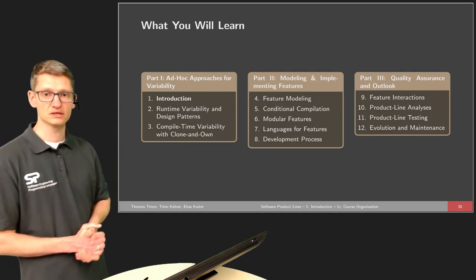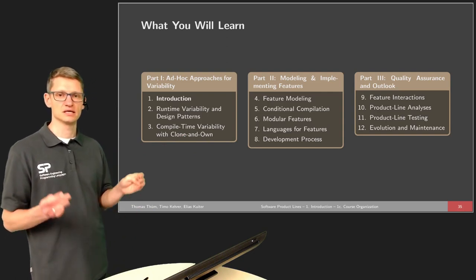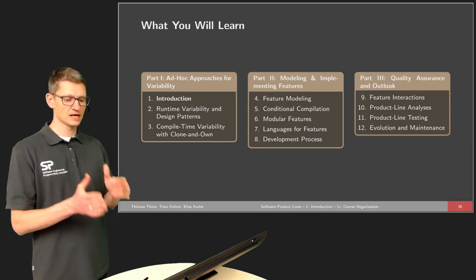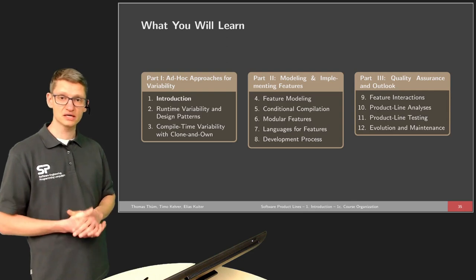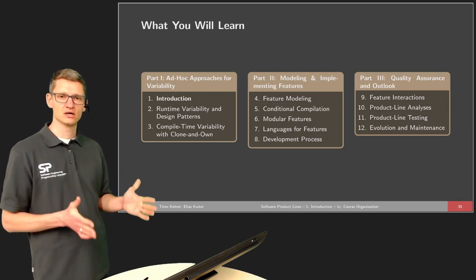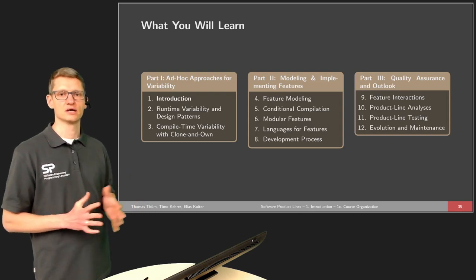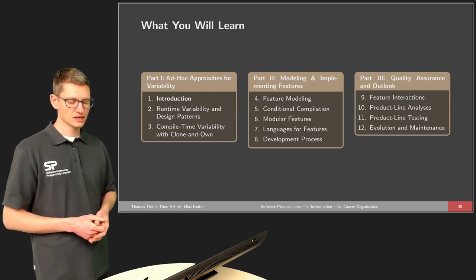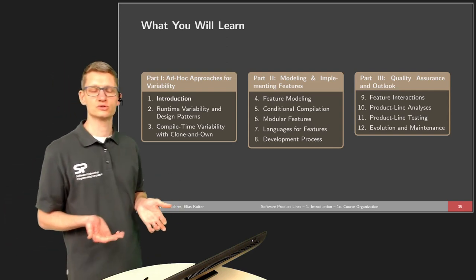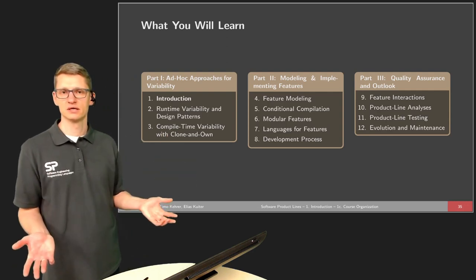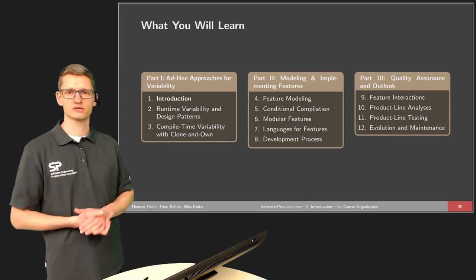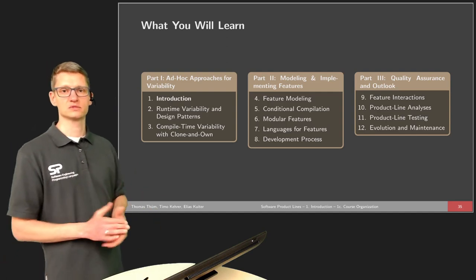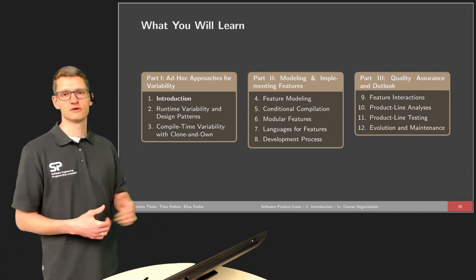We will talk about modularity of features in lecture six where the idea is that we have a certain module or plugin or something like this for every feature. And in lecture seven we will talk about particular languages designed for features or for product lines in which we can have language support for product lines and features. In lecture eight we will conclude this overall to discuss about the overall development process. So I mentioned scrum, waterfall as different development process models, and we also will discuss and see how the development process is different for software product lines.